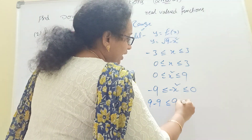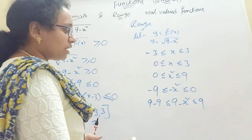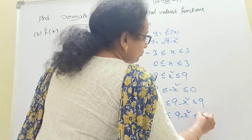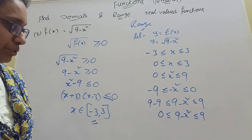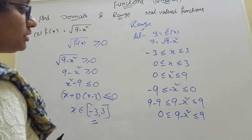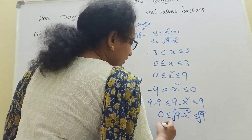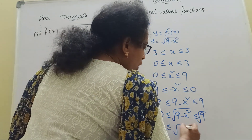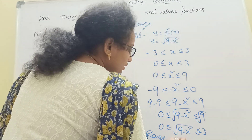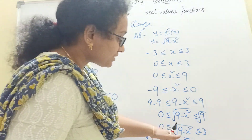0 less than or equal to 9 minus x square less than or equal to 9. So 0 less than or equal to 9 minus x square less than or equal to 9. Taking root: 0 less than or equal to root of 9 minus x square less than or equal to 3. Therefore range is 0 to 3, closed bracket. So domain is minus 3 to 3 and range is 0 to 3.